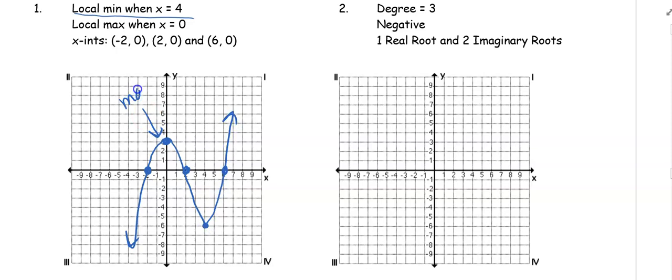You can see that this is my max, this is my min, and I could have chosen any max or min as long as it had an x value of 4 and an x value of 0. Done.